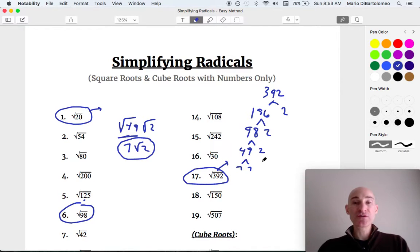So we're looking for groups of 2. We've got a group of 7s, a group of 2s, and we've got a 2 left over. So this is going to be 7 times 2, which is 14. And then this 2 that's left over, that's going to stay underneath the square root sign, and we've got it, 14 square root of 2.